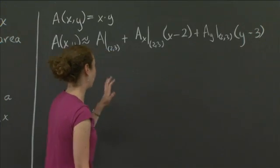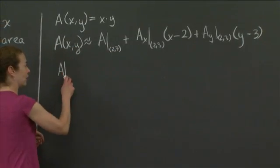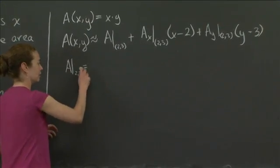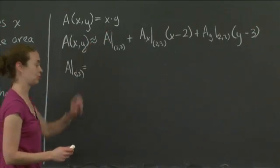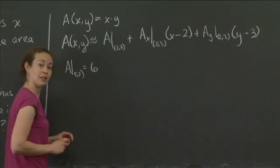So let me just point out what we have. Area evaluated at 2,3. Well, that's just 2 times 3, which we can do. So that's 6. That's pretty easy.